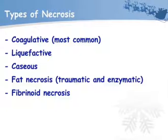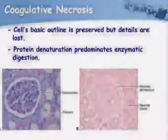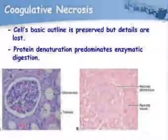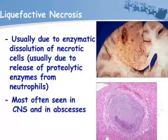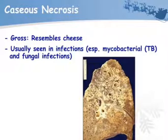Types of necrosis: coagulative necrosis — the cell's basic outline is preserved by the protein framework of the host; protein denaturation predominates over enzymatic digestion. Liquefactive necrosis is usually due to enzymatic dissolution of necrotic cells, typically due to release of proteolytic enzymes from neutrophils; most often seen in the CNS. Caseous necrosis resembles a cheese-like structure and is usually seen in infections, e.g., Mycobacterium tuberculosis and fungal infections.